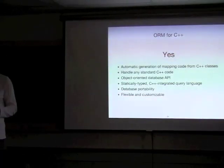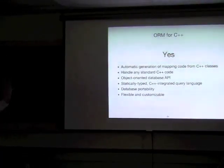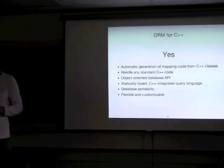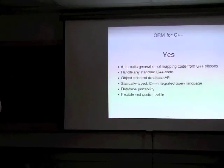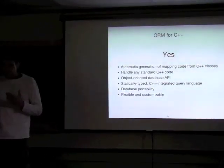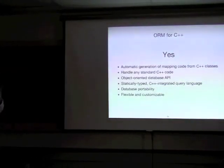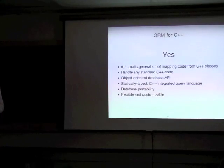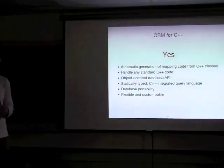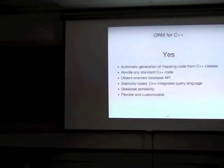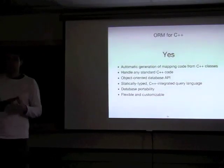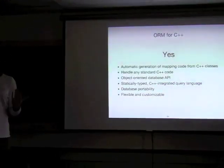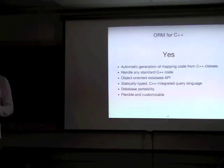As a result, it can handle pretty much any standard C++. ODB also provides object-oriented, multi-threaded database API with encapsulated connection management. Then there is the statically typed C++ integrated query language. Another important feature is database portability. Because the database conversion code is automatically generated by the ODB compiler and because the user code is written using a common database API rather than a specific database interface, all this makes it fairly easy to switch from one database vendor to another. Finally, ODB is very flexible and customizable.